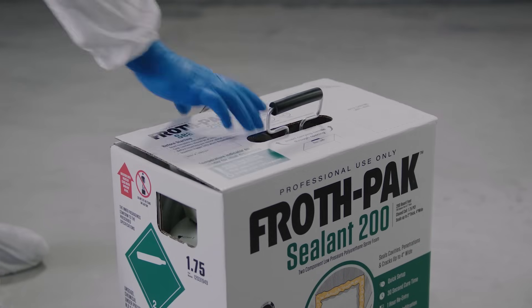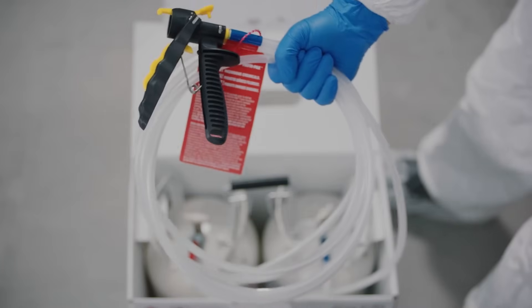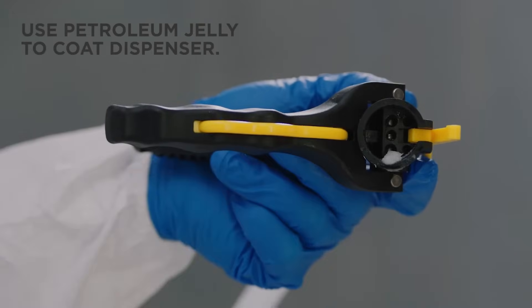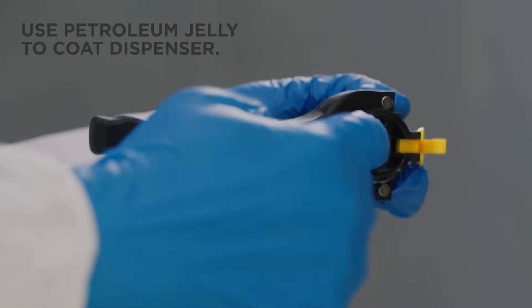Lift the Instaflow dispenser from the box and fully uncoil the hose. Now, coat the inside face of the Instaflow dispenser with petroleum jelly.